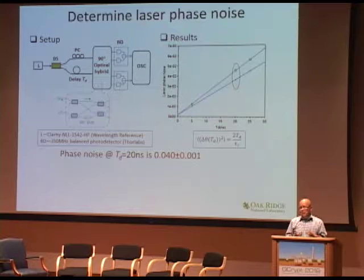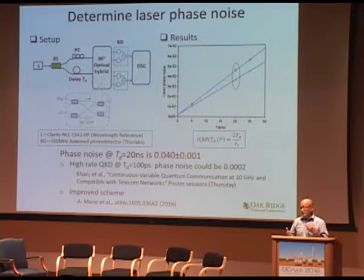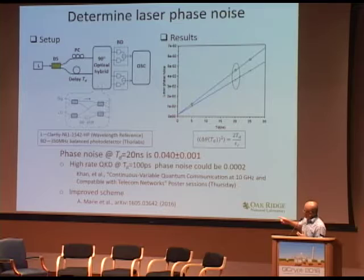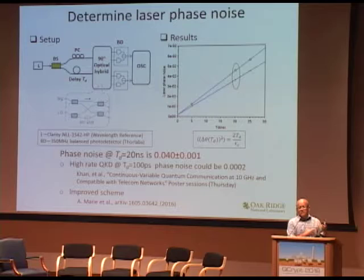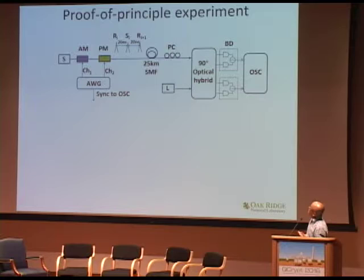Before moving forward, I would like to remark that there are ways to further reduce this phase noise. One obvious solution is to reduce Td using a faster detector. In fact, if we can run the CVQKD at 10 GHz, then Td could be as small as 100 picoseconds, resulting in very small phase noise. Another possibility is the new scheme proposed by Huang et al., where they also propose to generate both the signal and the phase reference pulse from the same laser pulse using an unbalanced fiber interferometer. Nevertheless, we proceed with this phase noise level and conduct a proof-of-principle experiment to show it works in a coherent communication scheme.